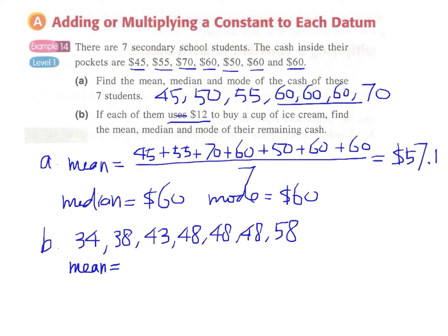And now the new mean can be found in two ways. The first one will be just simply add up again, add up all these numbers and then divide it by seven. And if you use a calculator, this will be $45.1.